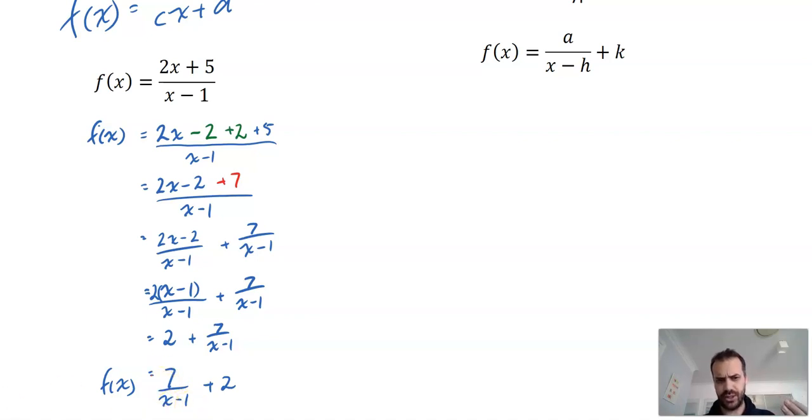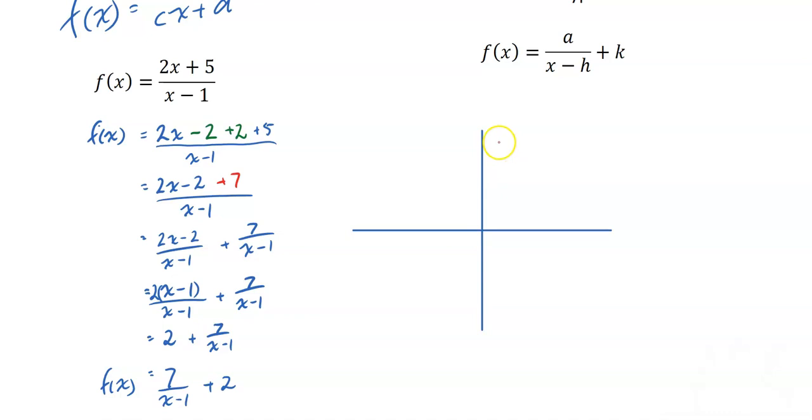7 over x minus 1 plus 2. I have a hyperbola here with an asymptote at positive 1, an asymptote at positive 2. And I should be able to find x and y intercepts because the graph is going to go like that and probably something like that. So I need to find my x and y intercepts just by letting x equal 0 and letting y equal 0.